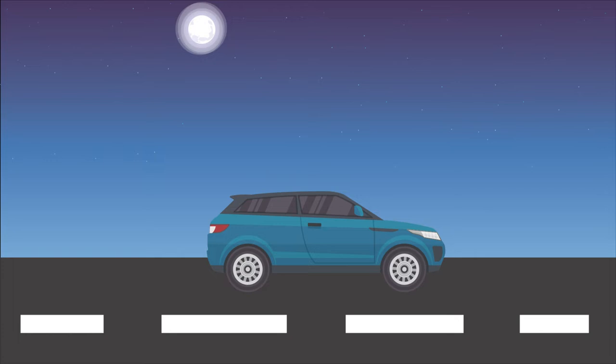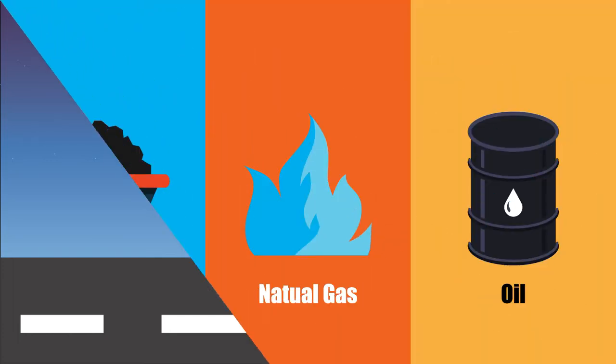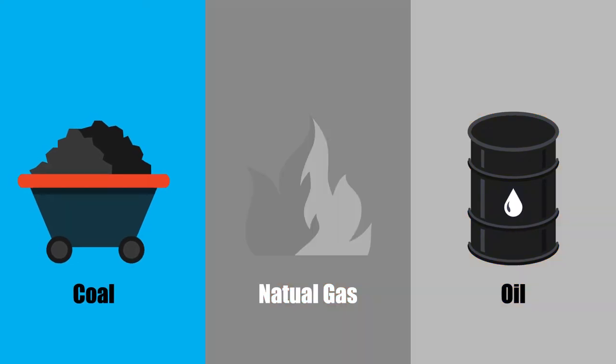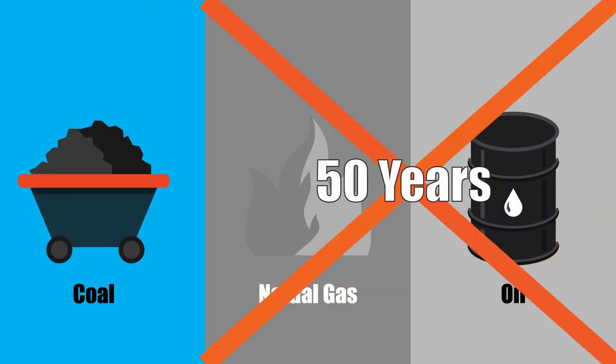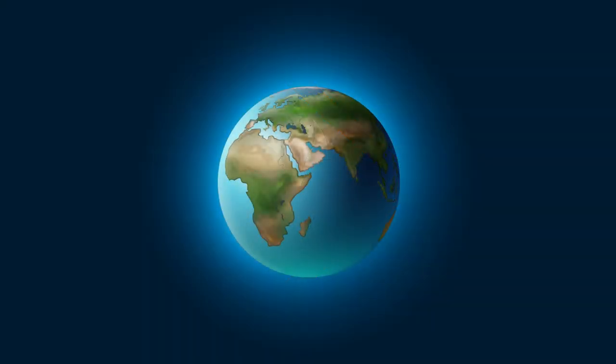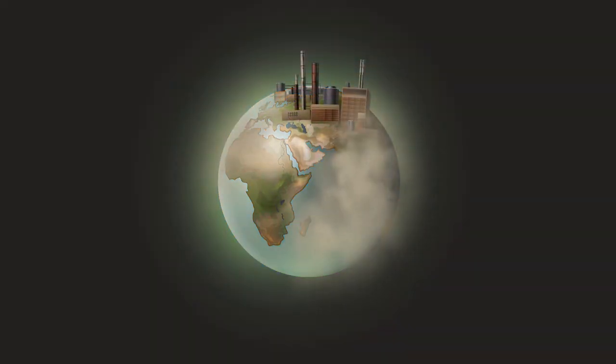In fact, if we keep using these non-renewable resources at the current rate, we may run out of oil and gas in about 50 years and coal in 115 years. Not only are these non-renewable resources going to be exhausted, they also pollute our planet and contribute to climate change.